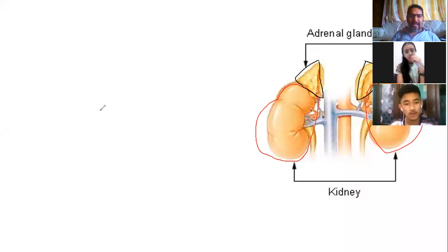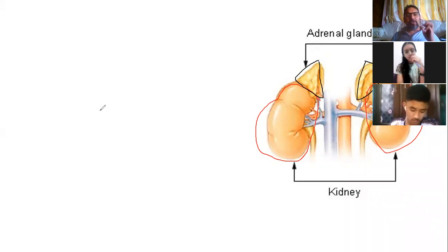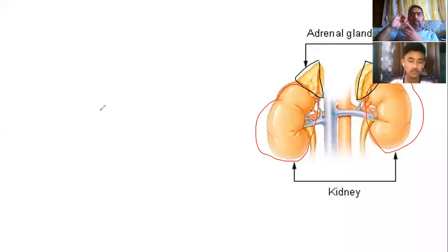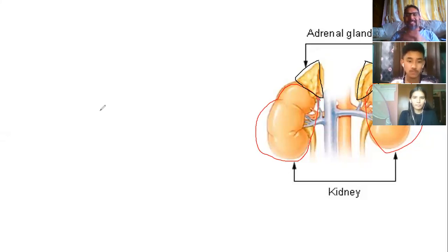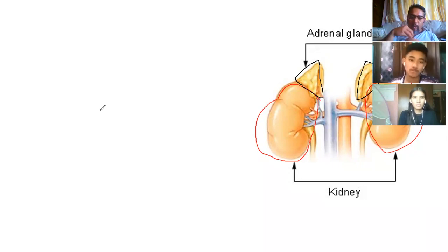The hormone produced is called adrenaline. There are three different types of hormones under it: glucocorticoids, mineralocorticoids, and sex hormones. These three categories of hormones are collectively referred to as adrenaline hormones.